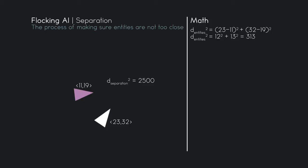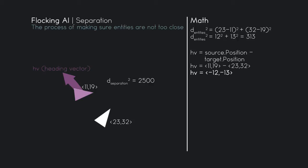We need to calculate a vector that points 180 degrees away from the other entity. That is simply the source entity minus the target entity: 11,19 minus 23,32, which gives us negative 12, negative 13. That vector is 180 degrees from the target entity, and it's the optimal vector to push the source entity away.